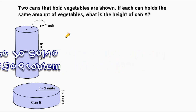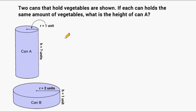This problem reads that two cans that hold vegetables are shown. If each can holds the same amount of vegetables, what is the height of can A? So what we're trying to determine is how tall is this can right here, can A.